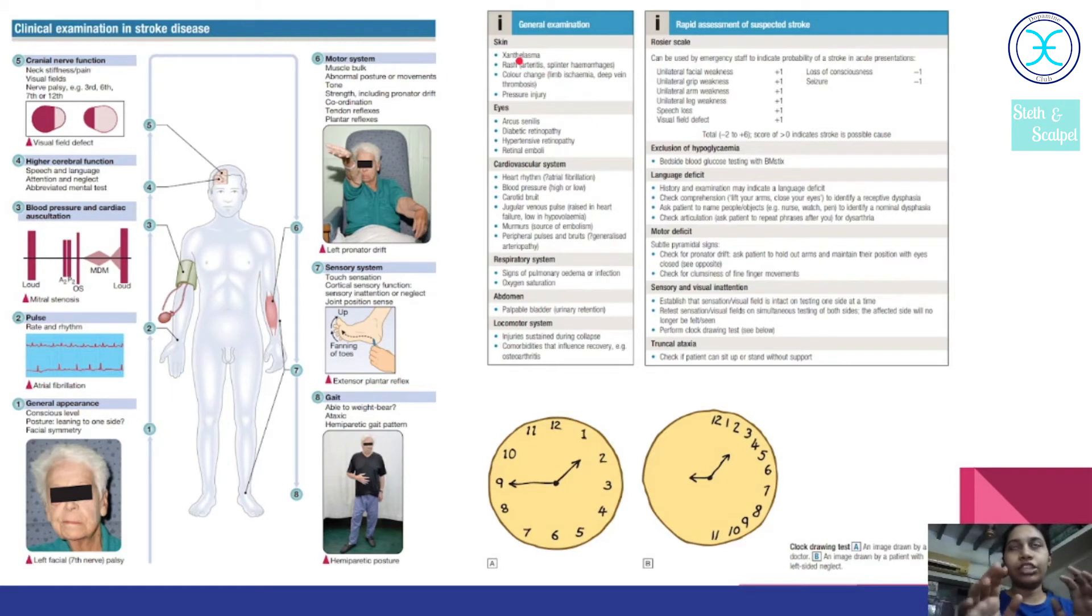Now let us move on to the general examination. Basically in skin, we look for xanthelasma because if there is high cholesterol, there is an atherosclerosis process going on which can cause either a thrombi or emboli which leads on to stroke. Xanthelasma is one of the clinical features which tells us about whether atherosclerosis is present or not. And then we look for any rash, color change or any pressure injury. Then in eye, we look for arcus senilis. It tells us whether the patient is of any old age. Old age means they are more prone to stroke features, and then diabetic retinopathy, hypertensive retinopathy, retinal emboli like that. In cardiovascular system, we look for any atrial fibrillation is there or not, or we look for any prosthetic heart valve is placed or not like that. In respiratory system, we see the features of pulmonary edema or infection saturation and oxygen saturation. And then in locomotor system, we look for the injury sustained with the stroke, whether there is a fall or any injury to the hip joint like that.